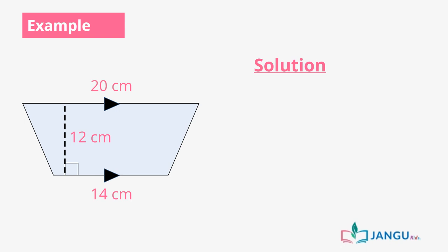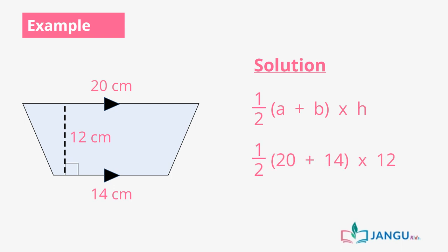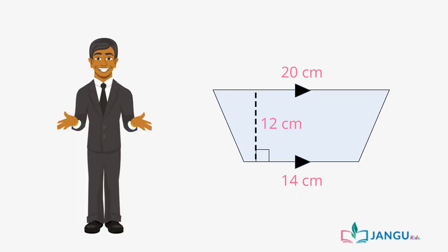We apply the formula half times (A plus B) times H, which is half of (20 plus 14) times 12, and when calculated, that is equal to 204 centimeters squared. And that's how easy it is to calculate the area of a trapezium with known height and length.